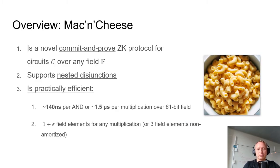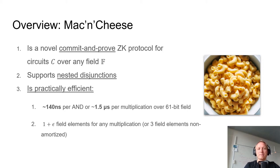As a quick overview in a nutshell, Mac and Cheese is a committed proof style zero-knowledge proof for arbitrary circuits over any field. It has specific optimizations that allow it to support nested disjunctions more efficiently and it's practically efficient. Our implementation, including both the pre-processing and the online phase, achieves 140 nanoseconds per proven AND gate or 1.5 milliseconds per multiplication over a 61-bit field. Our proof system asymptotically sends approximately one field element per multiplication, or three field elements if no amortizations are used.